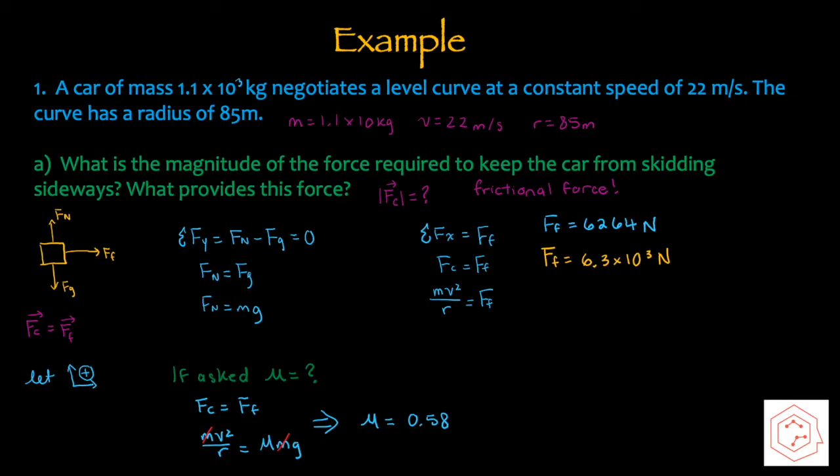If the question were to ask for the coefficient of friction, remember that friction equals the coefficient times the normal force. Solving the net force in the y-component, we know there's no acceleration in the y-component, so the normal force equals mg. Plugging that in, mv squared over r equals the coefficient times mg. Mass cancels since it's present on both sides, and isolating for the coefficient, you get 0.58.